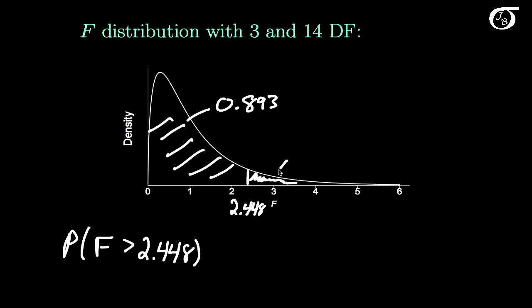And so the area we need is simply 1 minus 0.893, or 0.107. And that means that this probability here is 0.107 to 3 decimal places.